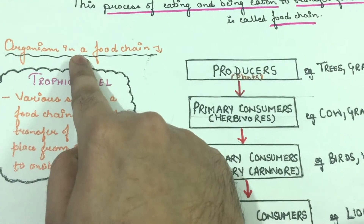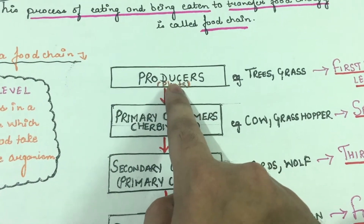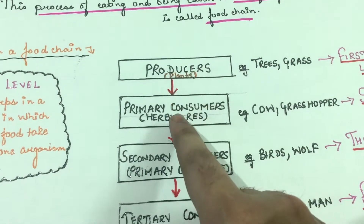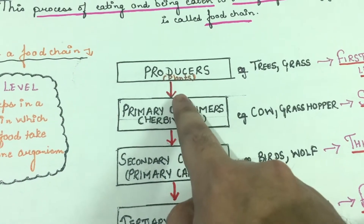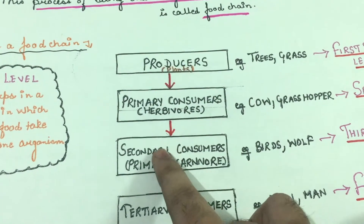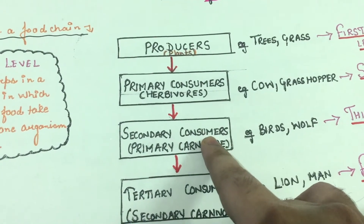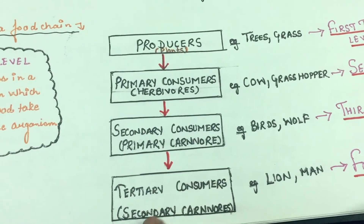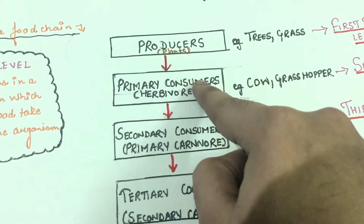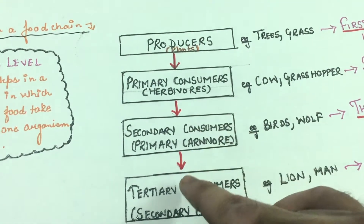Now let us look at the various organisms in a food chain. The first organisms are the producers — for example, a tree. These producers are eaten up by herbivores or primary consumers — for example, a cow. Primary consumers are eaten up by secondary consumers, also called primary carnivores — for example, a wolf. Secondary consumers are then eaten up by tertiary consumers.